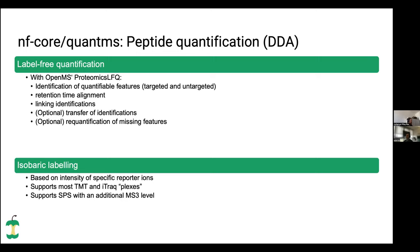For isobaric labeling, it is much easier because it's based on the intensity of so-called reporter ions. We support most TMT and iTrack plexes — the plex tells you how many channels you can multiplex into one sample, i.e., how many samples you can have in one mass spec run. We also support so-called SPS, which introduces a third fragmentation level for mass specs.